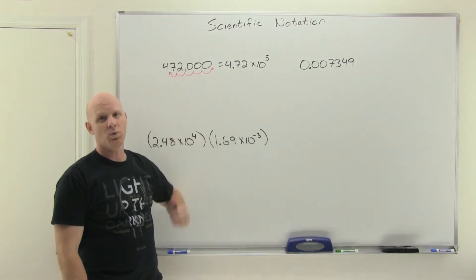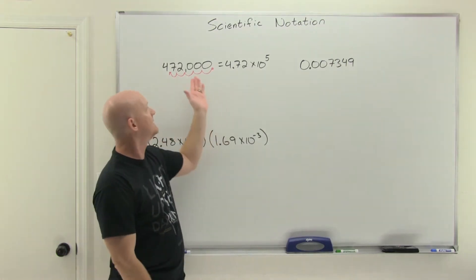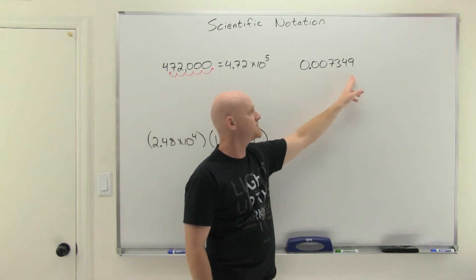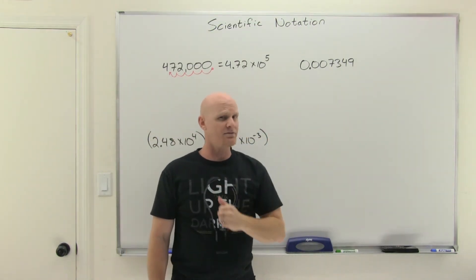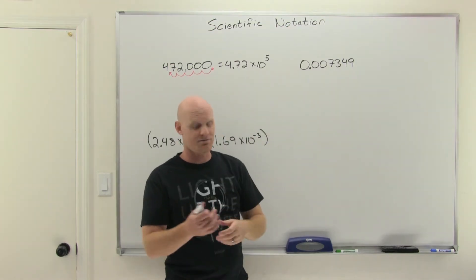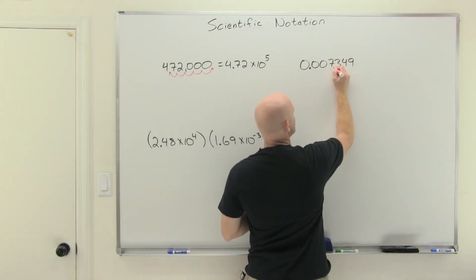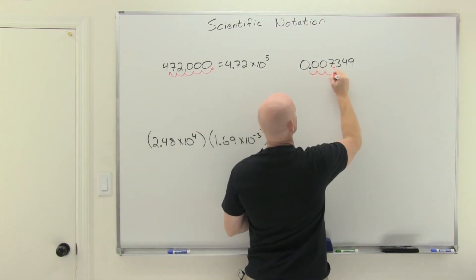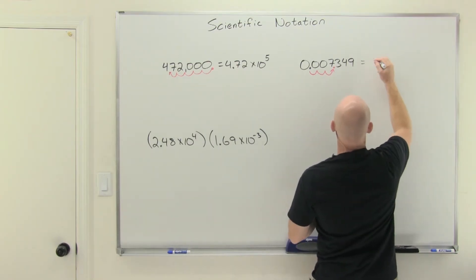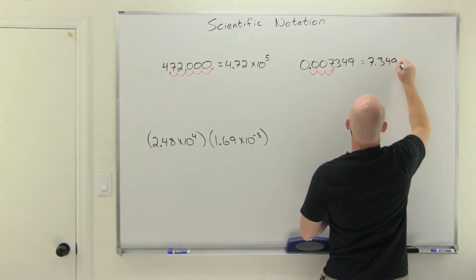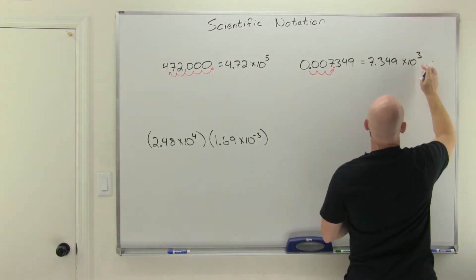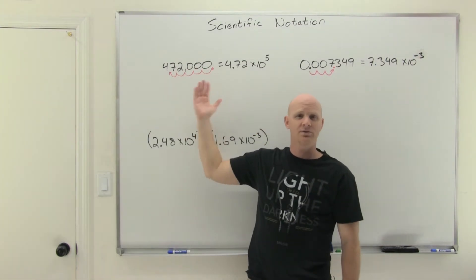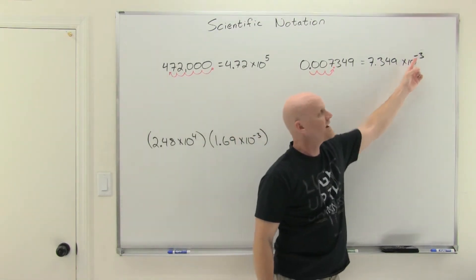For a number with an absolute value bigger than 1 — and it doesn't matter if it's positive or negative, that's why I say absolute value — you're going to have a positive power of 10. If the absolute value is less than 1, you get a negative power of 10. For example, moving the decimal 1, 2, 3 places to get one digit left of it gives us 7.349 times 10 to the negative 3rd power. Absolute value bigger than 1 means a positive power of 10; smaller than 1 means a negative power of 10.